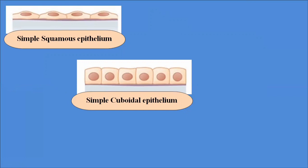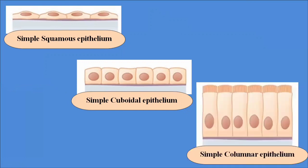The other type of simple epithelial tissue is the simple columnar epithelium. These are also a single layer of cells, but they are columnar — that is, rectangular — in shape. Simple columnar epithelium has different adaptations in different organs. In the stomach, it provides the lining to the stomach wall, and in the small intestine it is involved in the formation of microvilli, where it is involved in absorption processes.